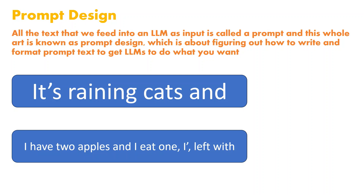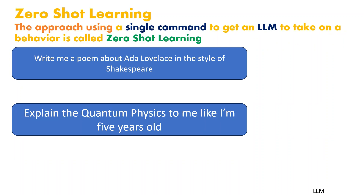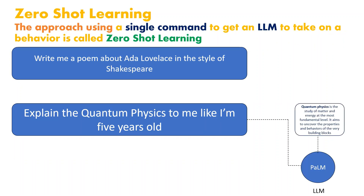In zero-shot learning, we just pass an instruction to the large language model. For example, 'Write me a poem about Ada Lovelace in the style of Shakespeare,' or 'Explain quantum physics to me like I am five years old.' In zero-shot learning, we simply pass an instruction to the large language model.